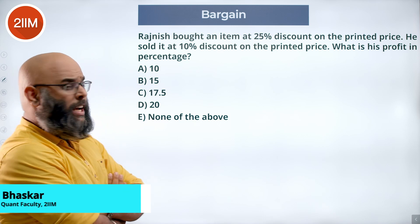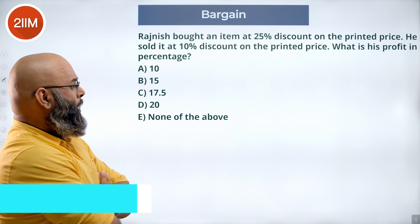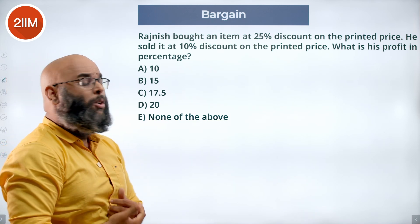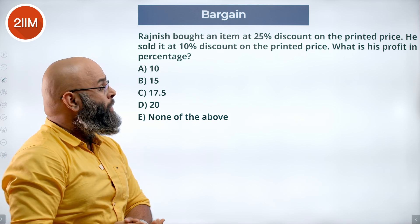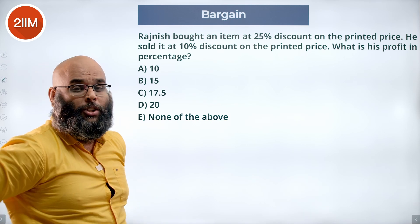Rajneesh bought an item at a 25% discount on the printed price. He sold it at a 10% discount on the printed price. What is his profit percentage?